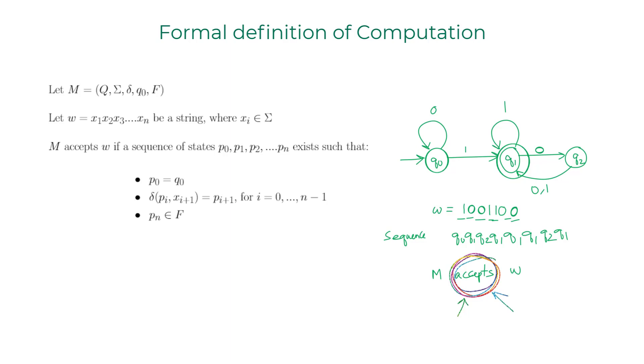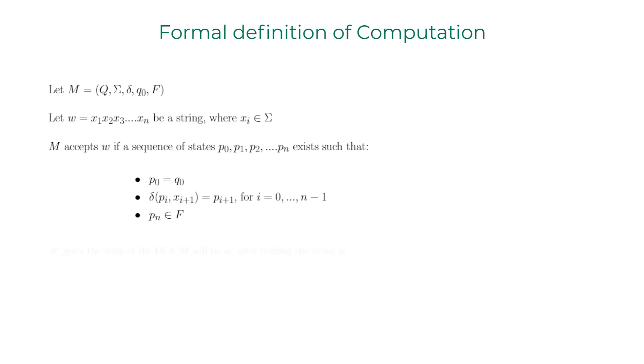This formal definition of computation allows us to define delta star. Delta star is an upgrade of delta which is the transition function. The domain of delta star is Q cross sigma star. This makes sense, right? So we're saying delta star is going to give us the state DFA M will be in after reading the string W.